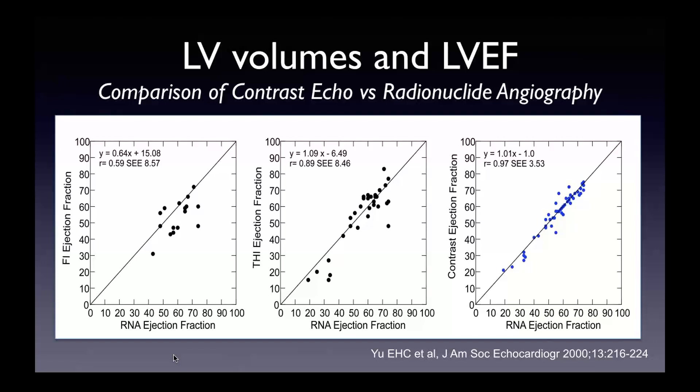A study from Eric Yu published in JACE 2000 looking at contrast echo ejection fraction measurements compared to MUGA scanning or radionuclide angiography showed correlation increases from fundamental to harmonic imaging because of better endocardial definition, and increases even further with the use of contrast with harmonics — with R values going from 0.59 to 0.89 to 0.97.